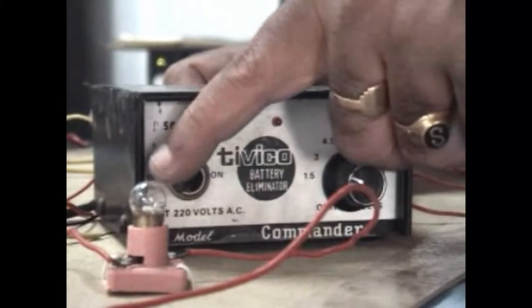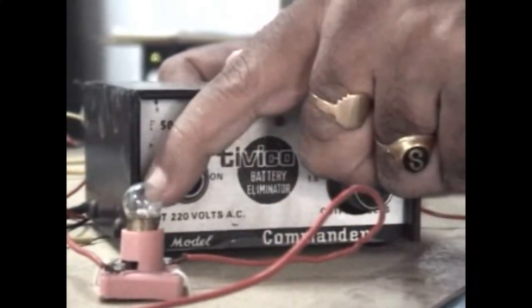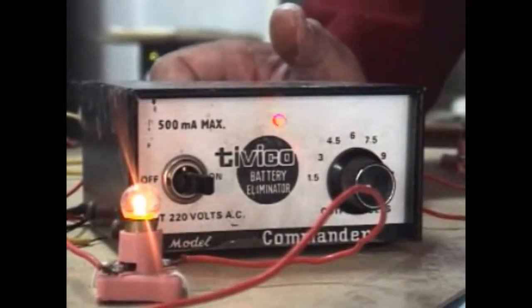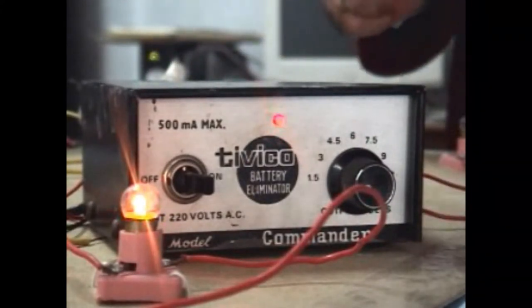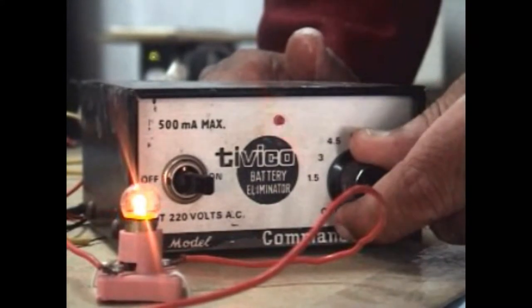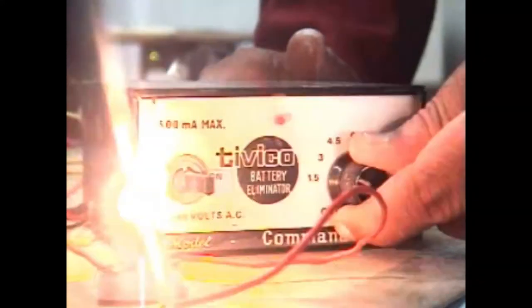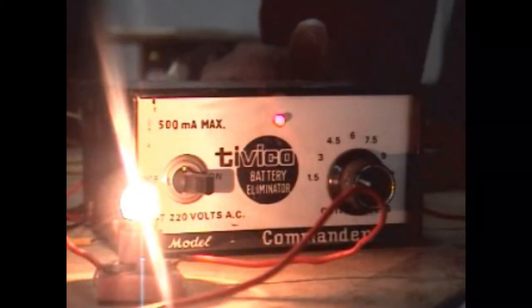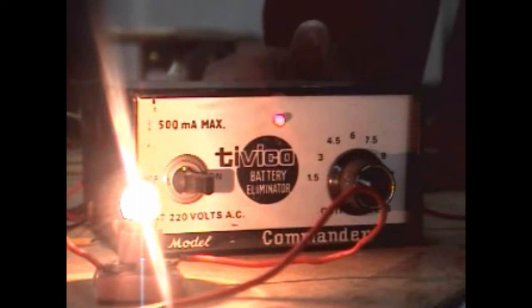Now let us begin. Let us begin with the very low voltage. Now you can observe the brightness of the bulb at 1.5. Now let me increase this value. Now you can see the brightness of the bulb is also increased.